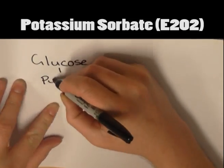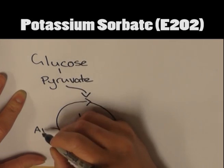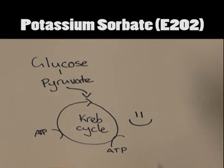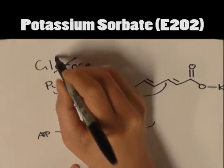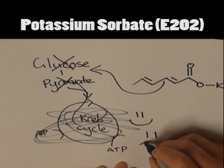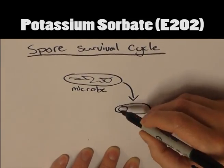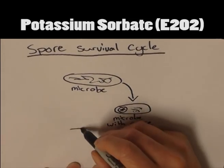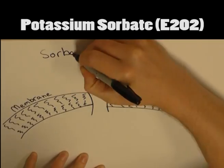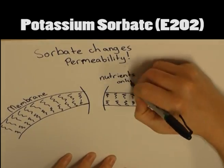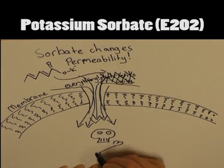Potassium sorbate works by inhibiting the Krebs cycle and electron chain functions in the microorganism required for metabolism. This is done by slowing down the formation of central substrates such as glucose and pyruvate required for the organism to survive. Sorbate also acts on the organism's survival and reproduction cycle, acting on the spore membranes and altering their permeability, making them much more susceptible to their surrounding environment.